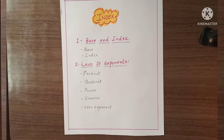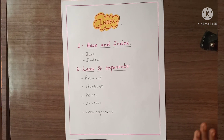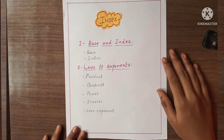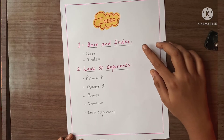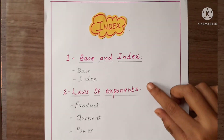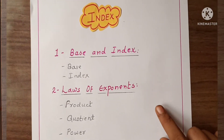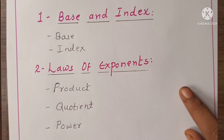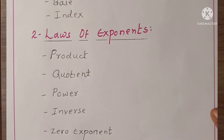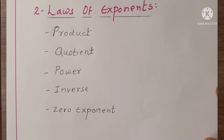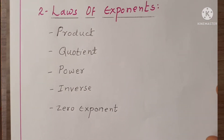Here is the second page which is the index. First one is base and index — base and index. Second one is laws of exponents — product, quotient, power, inverse, and zero exponents.